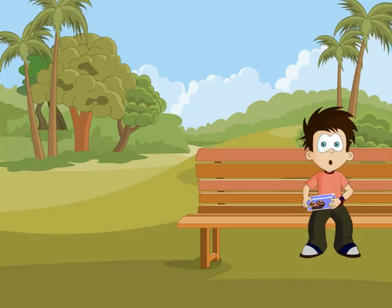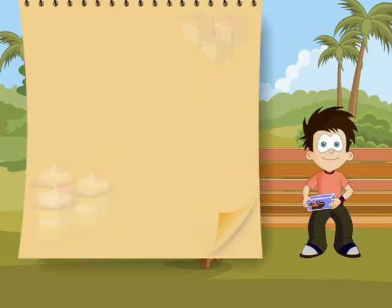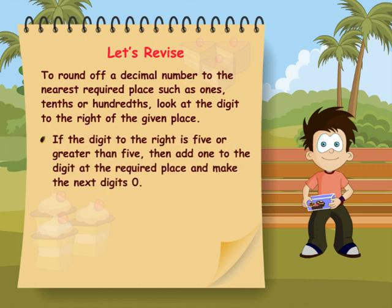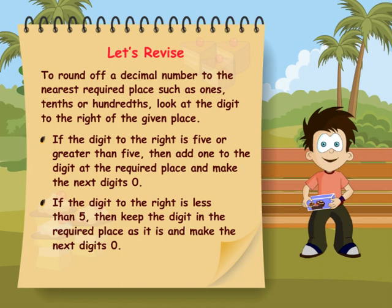Remember this about rounding off decimal numbers. To round off decimal numbers to the nearest required place such as ones, tenths or hundredths, look at the digit to the right of the given place. If the digit to the right is 5 or greater than 5, then add 1 to the digit at the required place and make the next digits 0. If the digit to the right is less than 5, then keep the digit in the required place as it is and make the next digits 0.